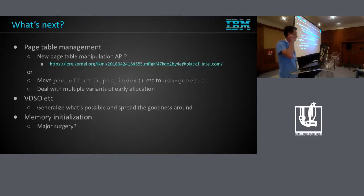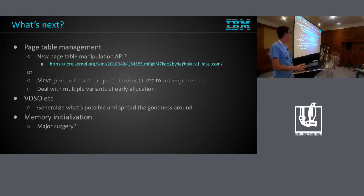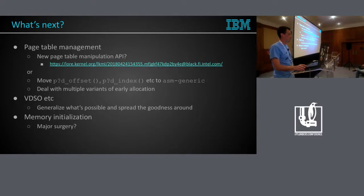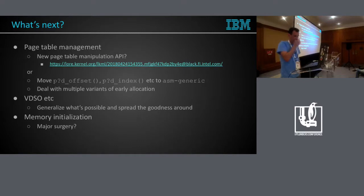Remove duplicated code in the architectures and have as few identical functions as possible. For different functionality parts that implement the same semantics in different ways, it requires more work, but something like an mm/vdso.c makes sense — doing all the mapping with architecture-provided VDSO blobs. The memory initialization is a bit of a pain because it evolved organically and does really interesting things.